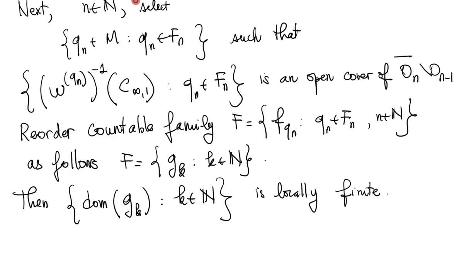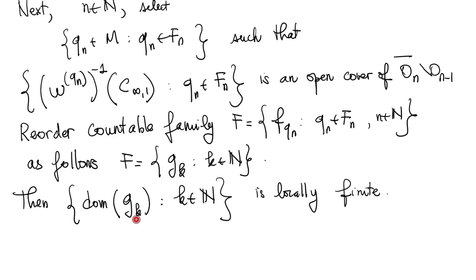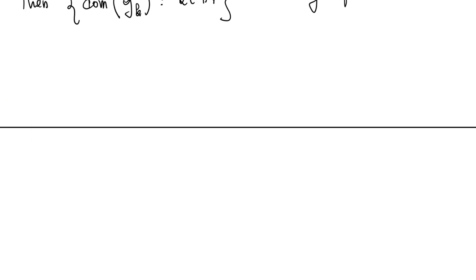For any natural number n, select points q_n in the manifold M parameterized by sets such that this collection forms an open cover of the closure of O_n minus O_{n-1}. Then reorder the countable family of functions f_{q_n} as the collection g_k, where k runs over the natural numbers — so g_1, g_2, and so on.